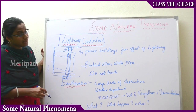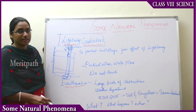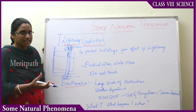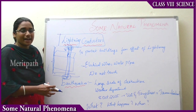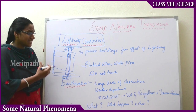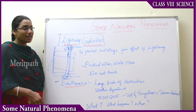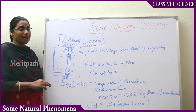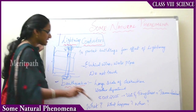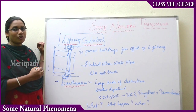Now let us look at another serious natural phenomenon which we cannot predict at all — earthquakes. Unlike lightning and thunder, which we can assume may occur during heavy rain or high winds, earthquakes cannot be predicted quickly. Due to this, earthquakes result in huge destruction of life, resources, and properties. We will be studying what earthquakes are, what causes them, and what happens when they occur in detail in later sections.